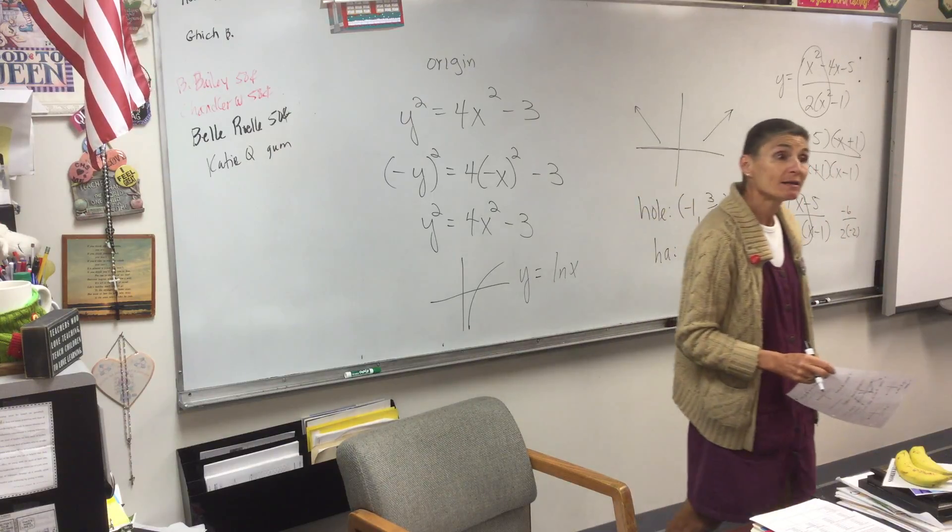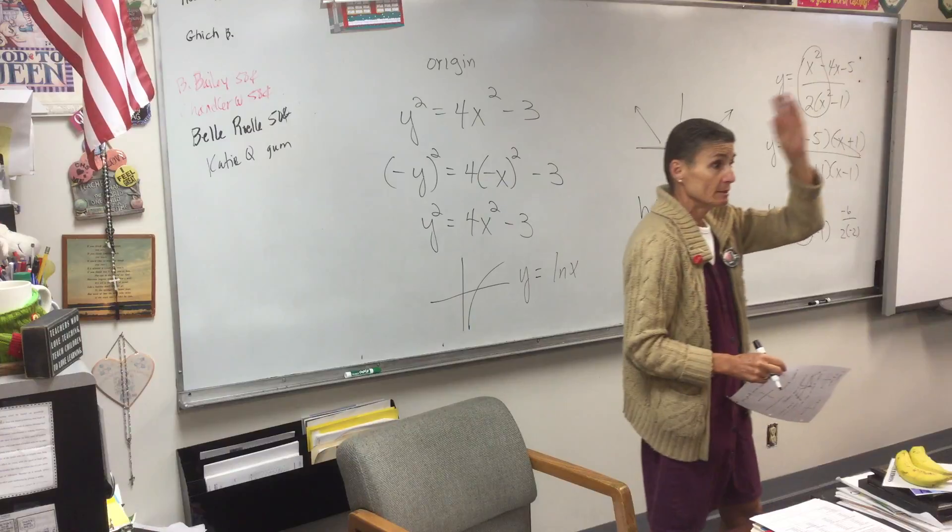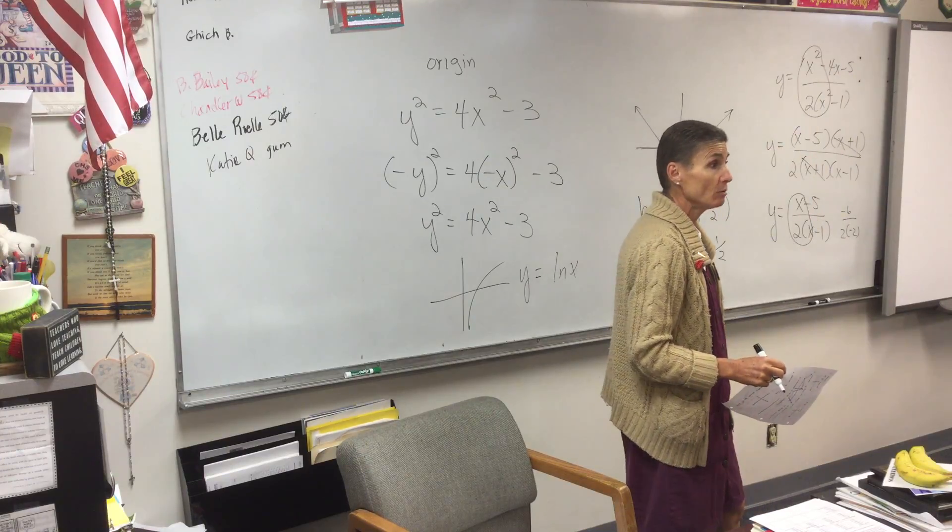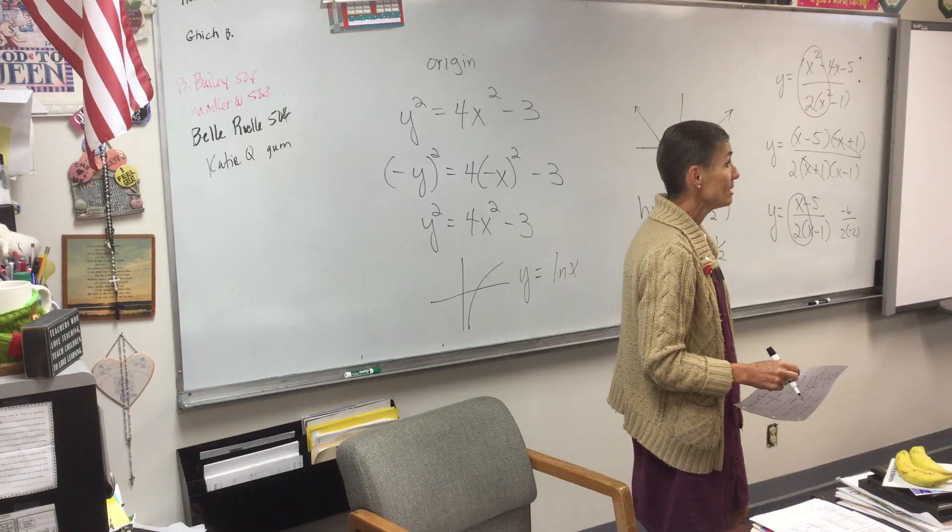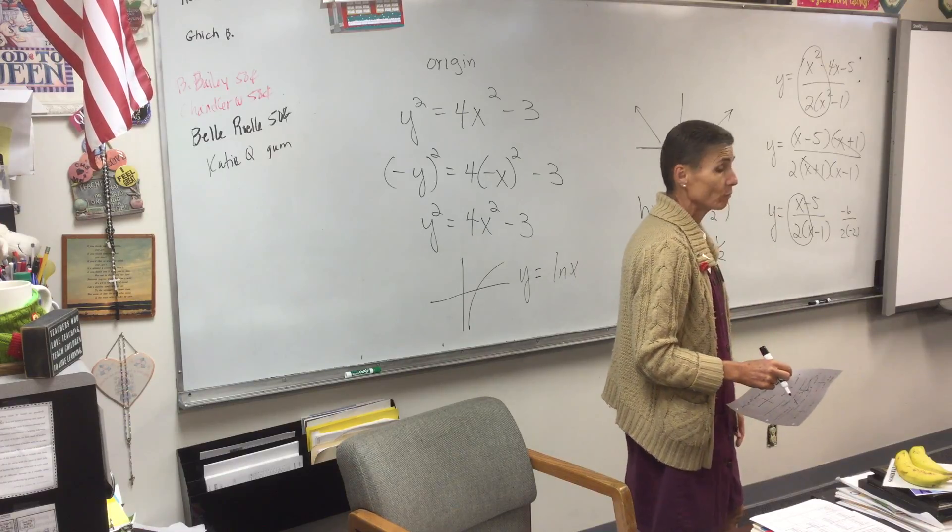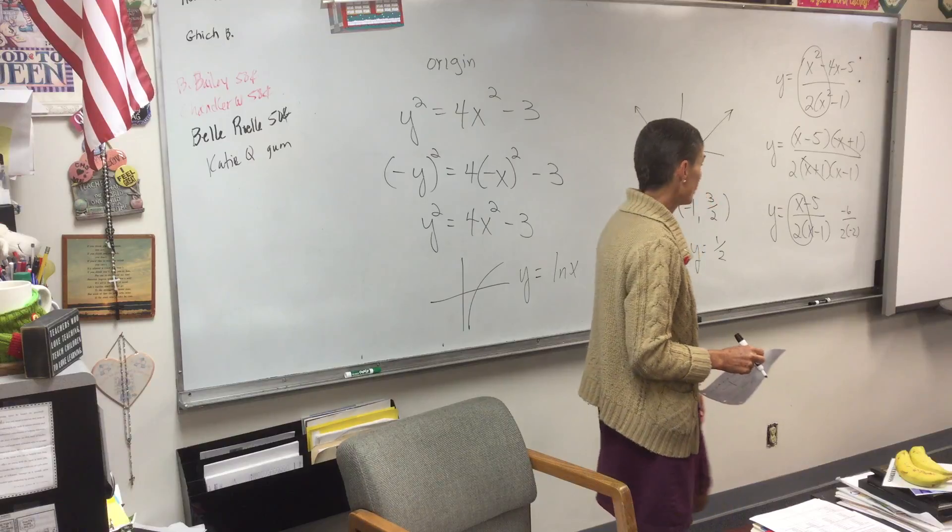If the one on the bottom is bigger, the asymptote's at zero. If the one on top is bigger, if the power on top is bigger, then we don't have one.